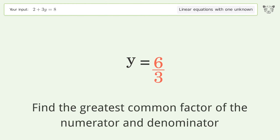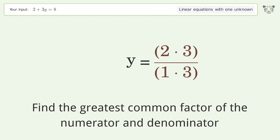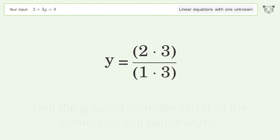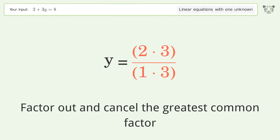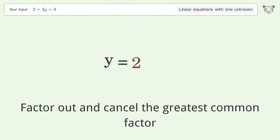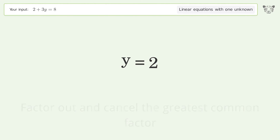Find the greatest common factor of the numerator and denominator. Factor out and cancel the greatest common factor. And so the final result is y=2.